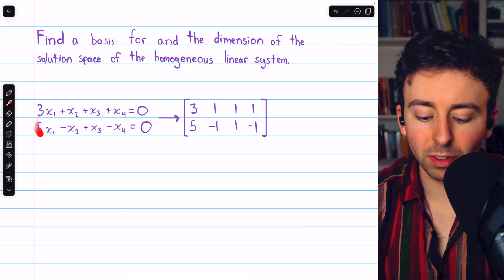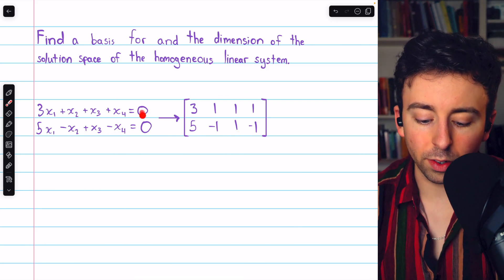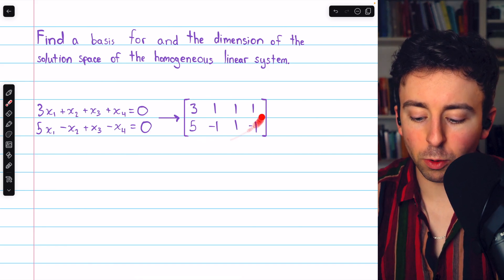Let's represent the system with its corresponding coefficient matrix. We, of course, don't need to include the constants since they're all zero. So, here's our matrix.